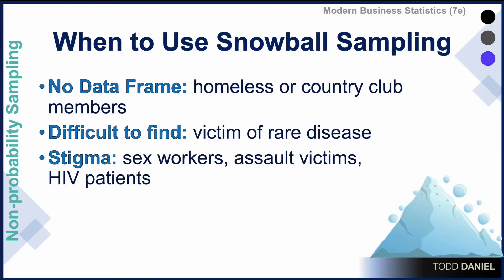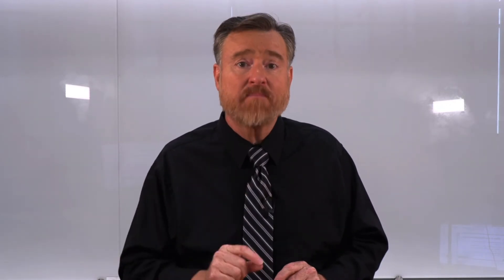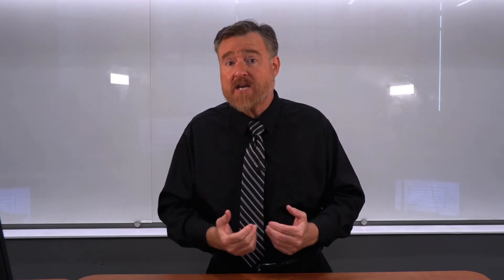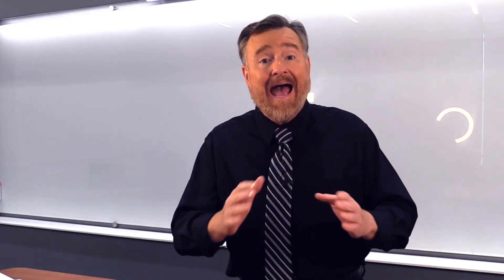These are people who might not want to identify themselves, but would trust someone else whom they know if that person referred you to them. Similarly, members of a population who have intense interest in self-protection — cult members, extremist groups, terrorists, or members of the CIA or FBI. In each of these cases, the individuals don't want others to know who they are. However, they may trust someone they know as a referral source, allowing you as a researcher access to a population that you might not otherwise have.